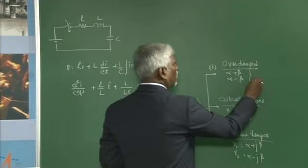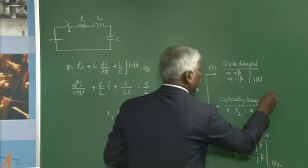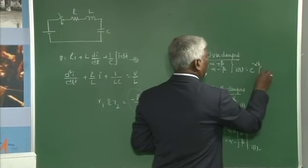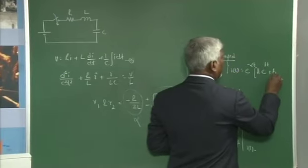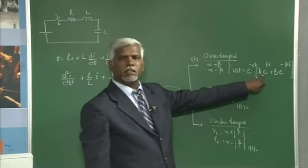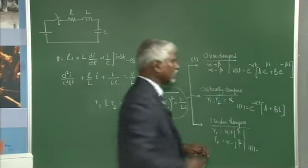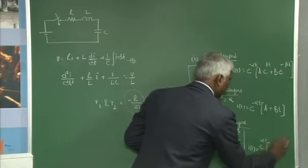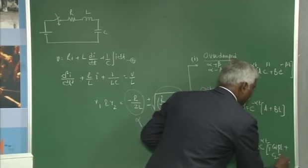The solutions for current I(t) in each case are: Case 1 (over-damped): e^(-αt) × [A·e^(βt) + B·e^(-βt)]. Case 2 (critically damped): e^(-αt) × (A + Bt). Case 3 (under-damped): e^(-αt) × [C1·cos(βt) + C2·sin(βt)].